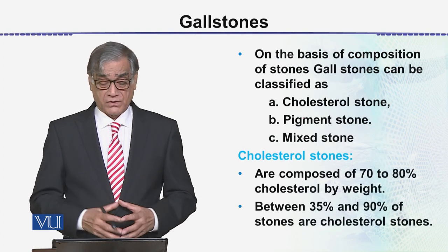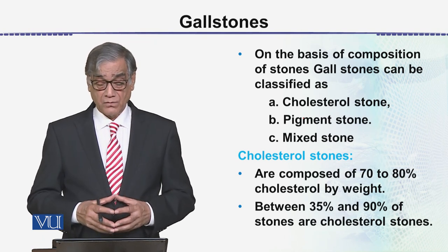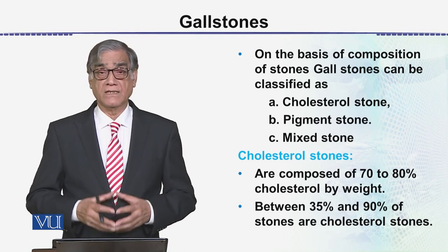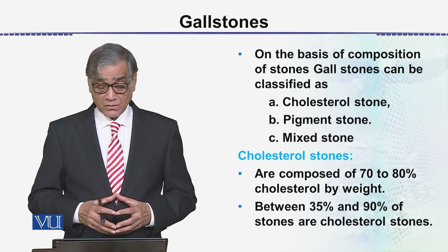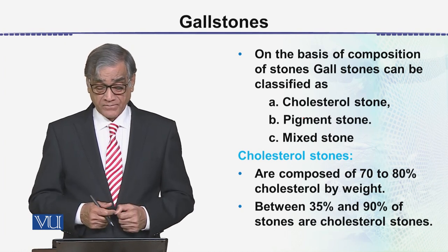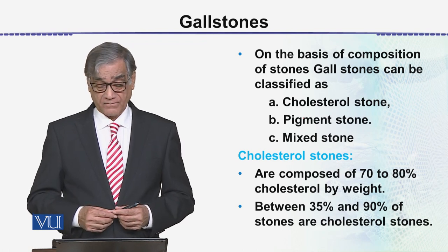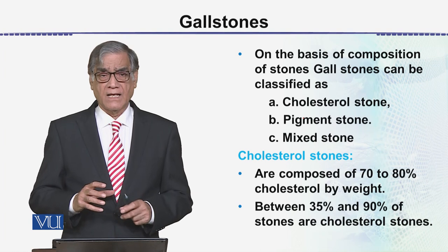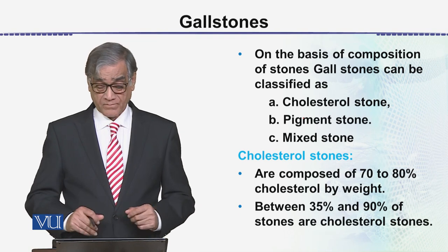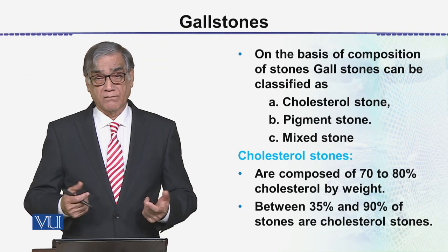On the basis of composition, gallstones can be classified into three types: cholesterol stones, pigment stones, and mixed stones. Cholesterol stones are formed from cholesterol deposition; they are composed of 70–80% cholesterol by weight. Between 35–90% of all gallstones are cholesterol stones.